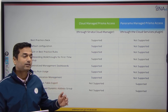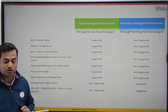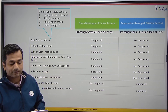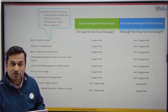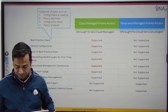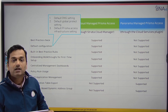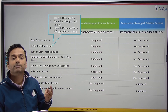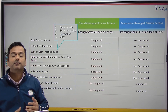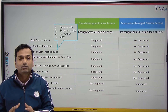What are the features supported only by Strata Cloud Manager that are not available in Panorama? Number one, best practices check — you can run config check, cleanup, policy optimizer, compliance check, and policy analyzer. This is not supported in Panorama. Second, there are default configurations already present, such as DNS settings, default GlobalProtect configuration, and default Prisma Access infrastructure settings, which are not available in Panorama. Also, built-in best practices such as best practice security rules, security profiles, decryption policy, and Microsoft Office 365 rules.